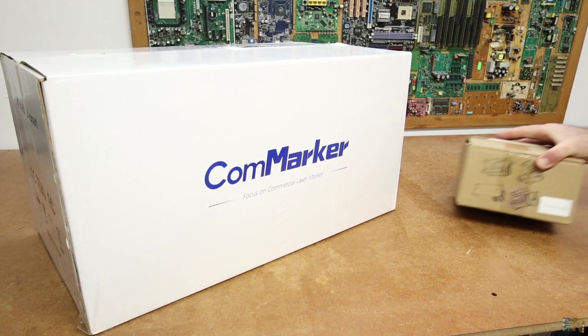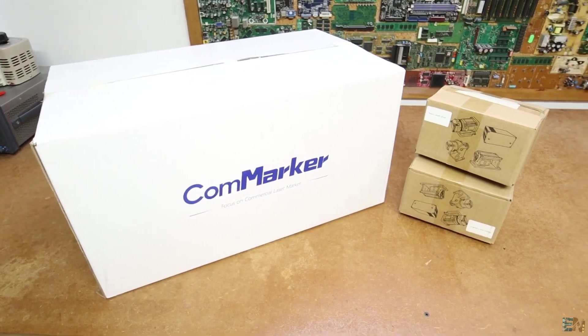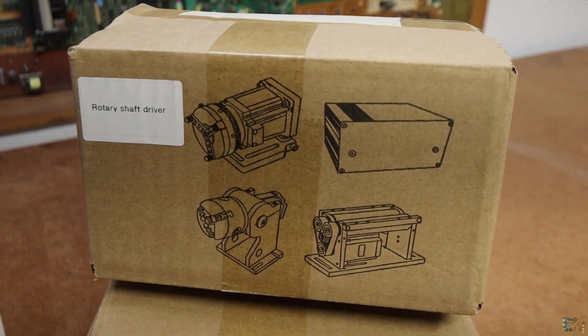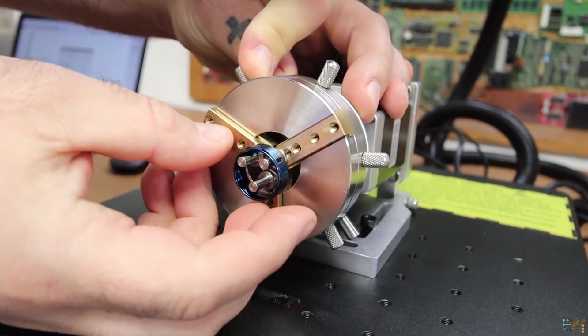Before I assemble it and make some tests, let's check what we receive. In my case I've got the laser machine but also the rotary attachment for engraving on round objects such as rings, bottles, metal tubes and so on. We will do that later.